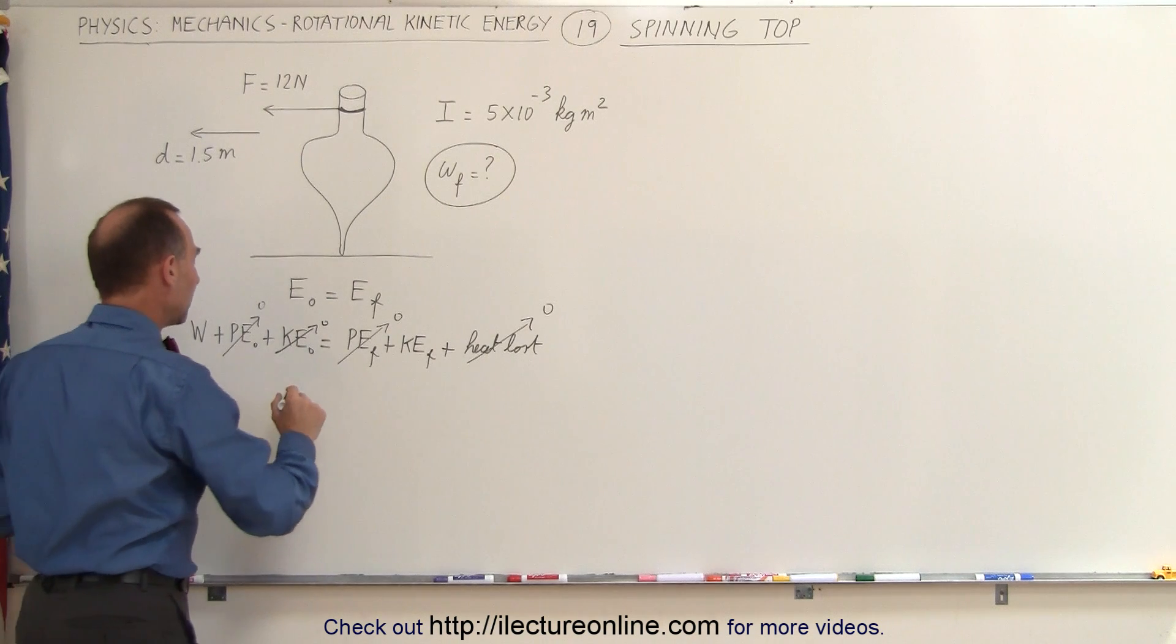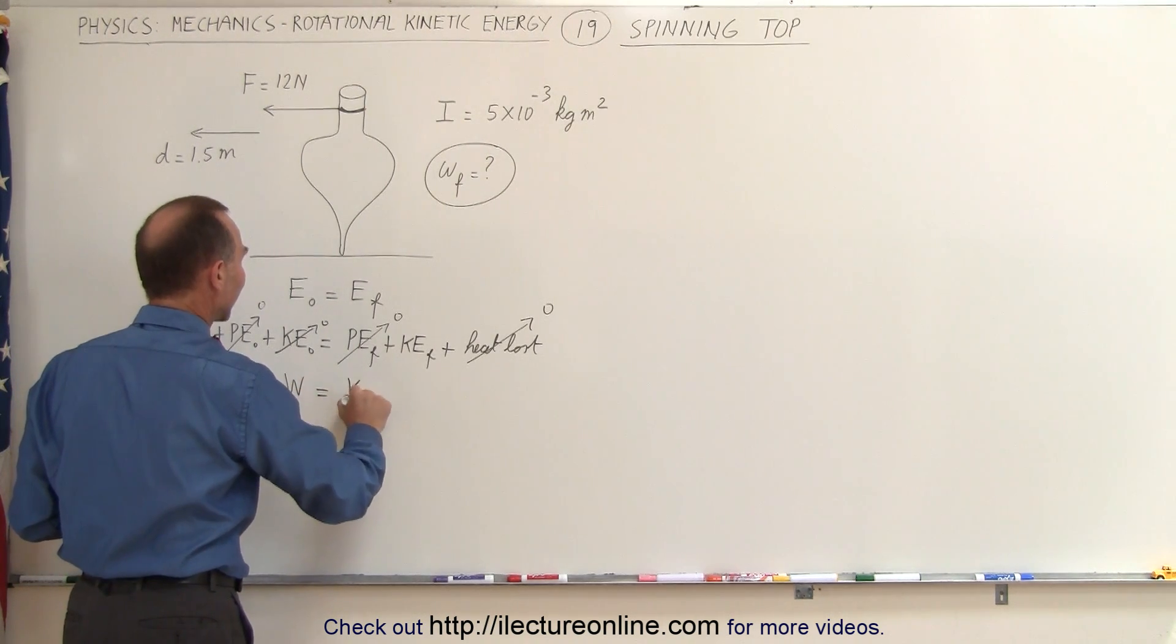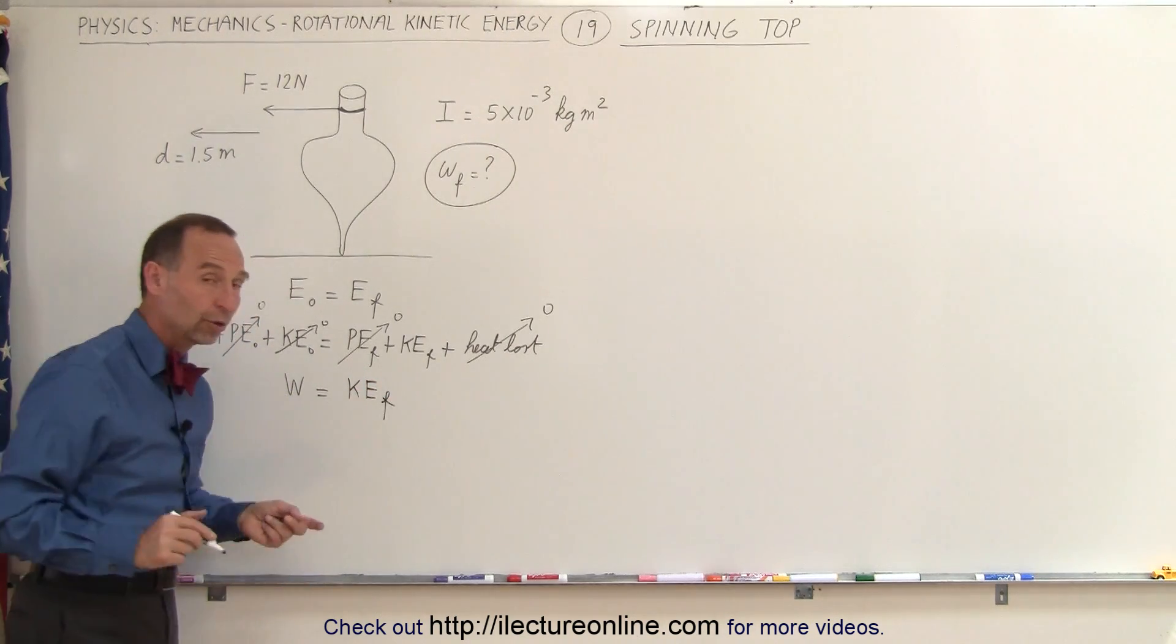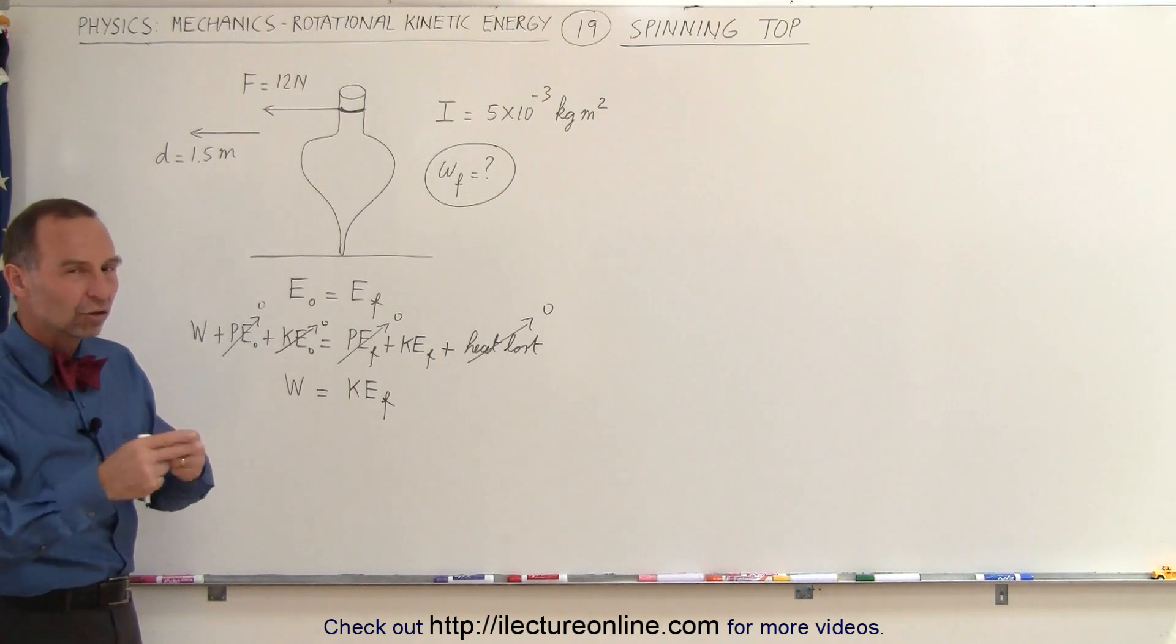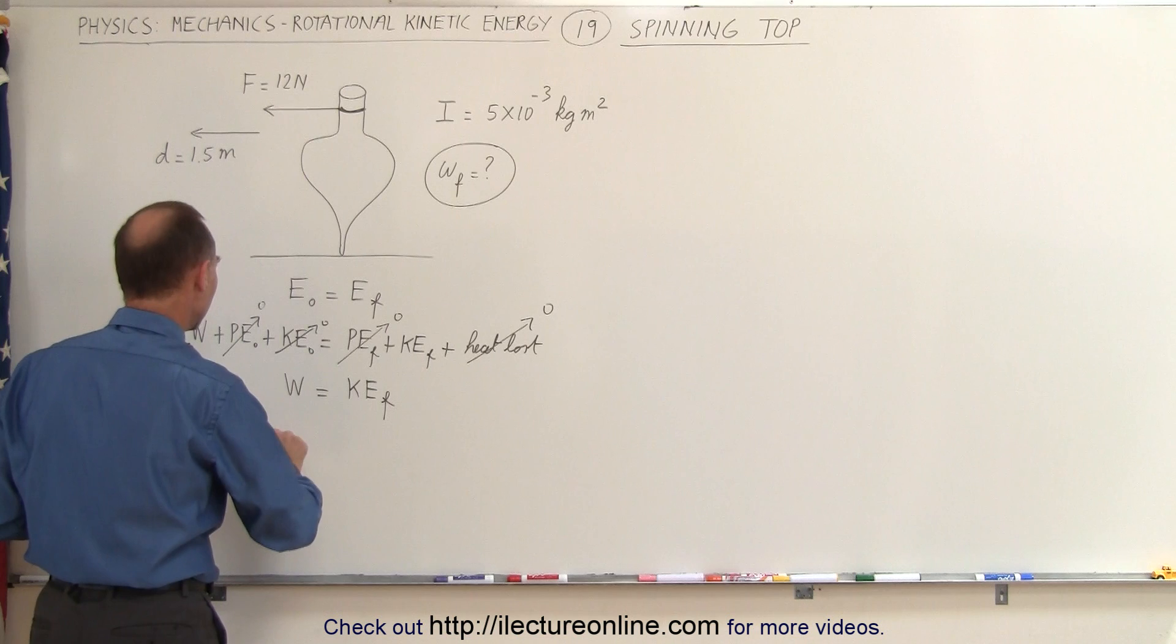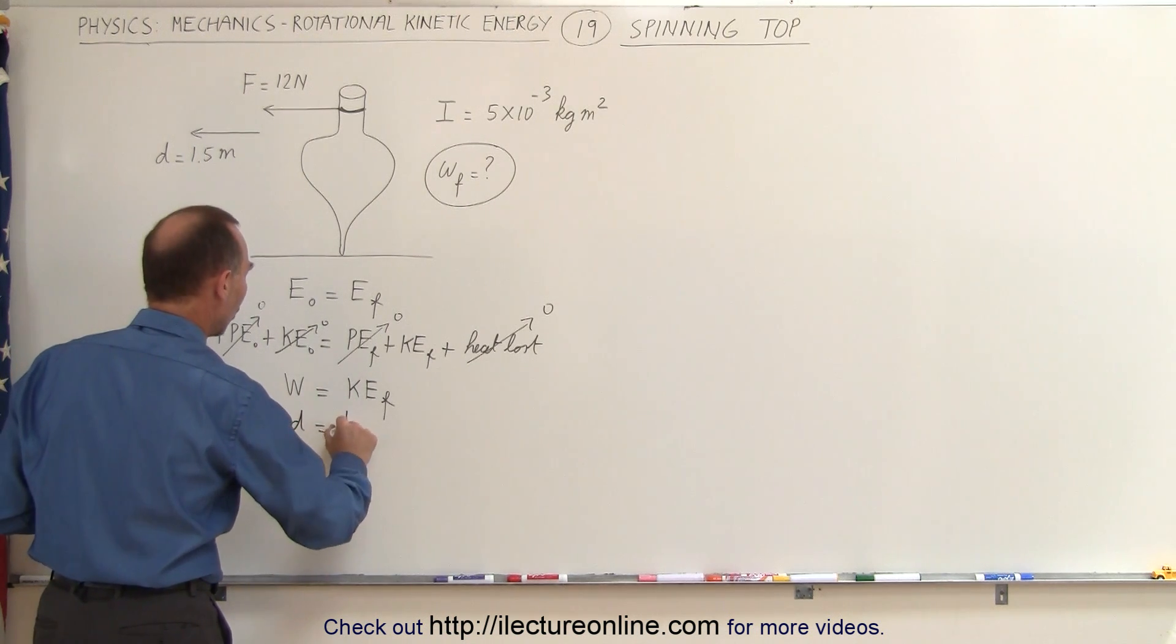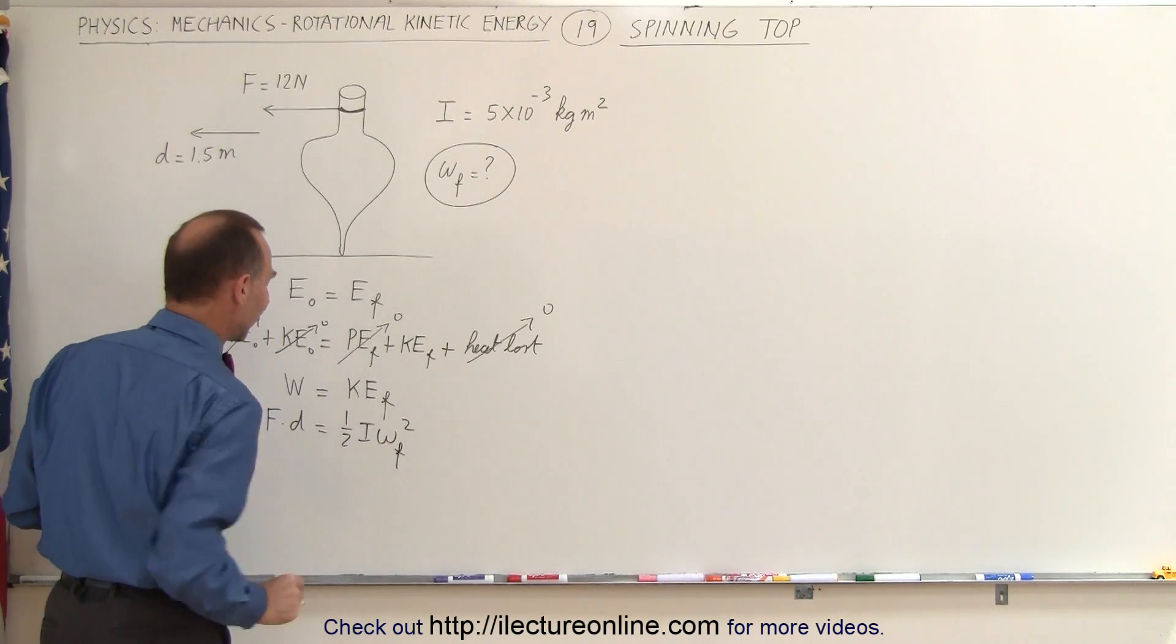With other words, the whole problem ends up being the amount of work put into the system is equal to the final kinetic energy of the top. And of course in this case the kinetic energy will be only rotational kinetic energy. There's no translational speed involved here. The work done can be defined by the force times the distance equals one-half I omega squared. And that will of course be the final omega squared.